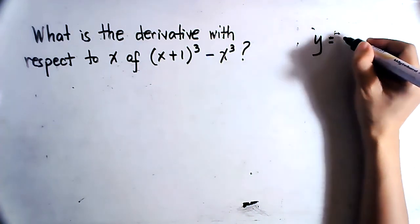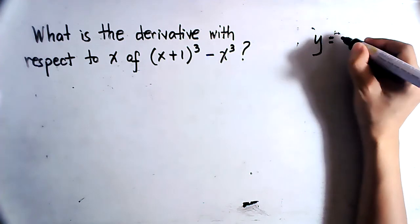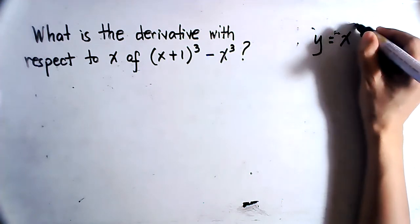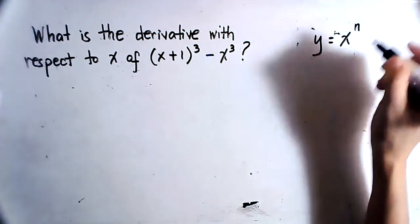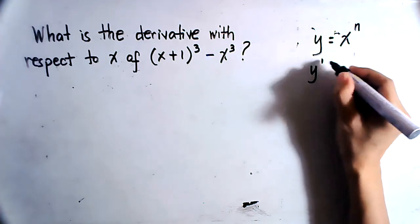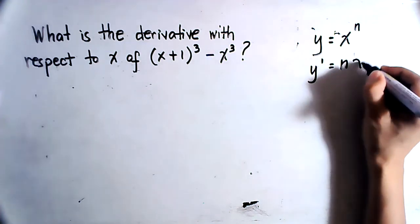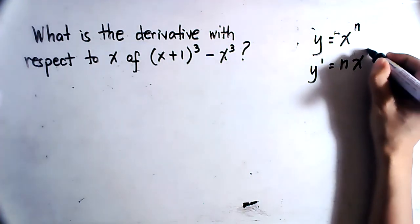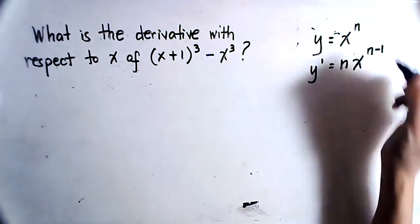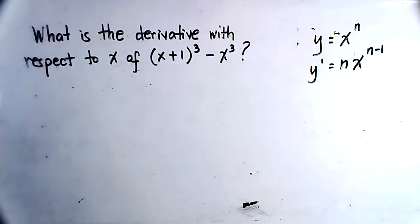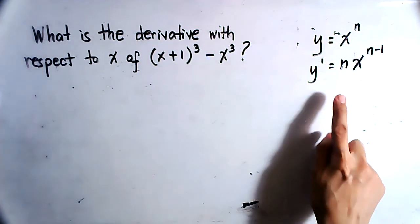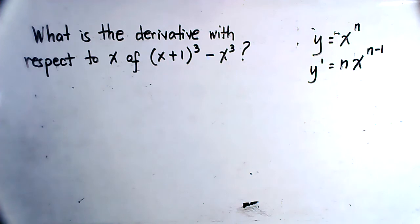If y is equal to x raised to n, the first derivative will be equal to n times x raised to n minus 1. This is the formula we will be utilizing.